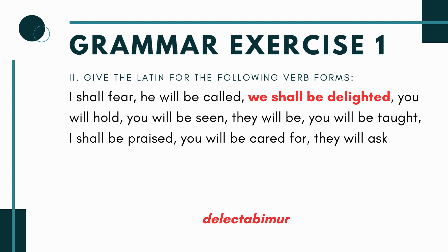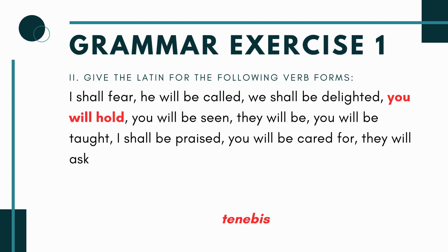Next you have 'we shall be delighted' — it's passive, you can tell by the 'be delighted' part. Think of delectare, the verb to delight. 'We' is first person plural but it's passive, so it's '-mur,' giving you 'delectabimur' — we will be delighted. Next you have 'you will hold' — this is the verb tenere, active voice second person singular. It's going to be 'tenebis,' following the bo-bi-bi-bu pattern.